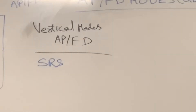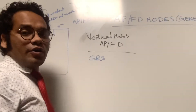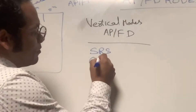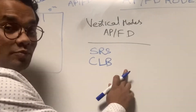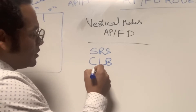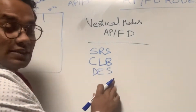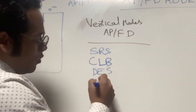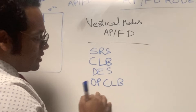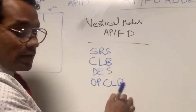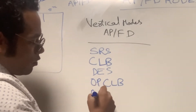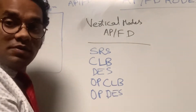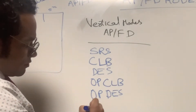The modes which can appear in the second column for vertical modes are: SRS — Speed Reference System — used for takeoff and go-around. The next one is CLB, which is the climb mode. Next is DES, which is the descent mode. After that is OP CLB, which means open climb.